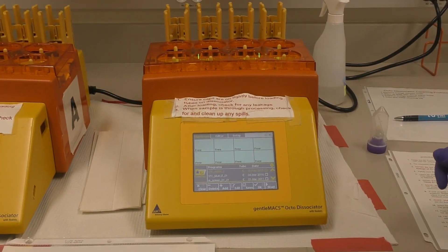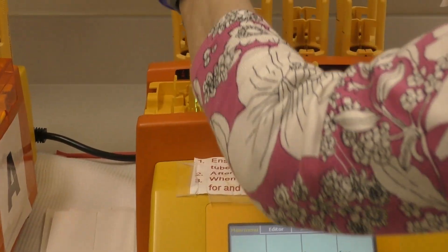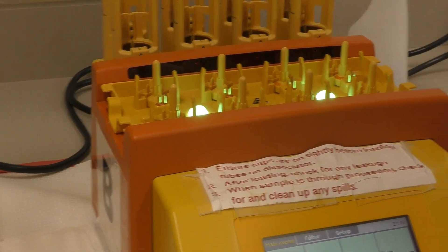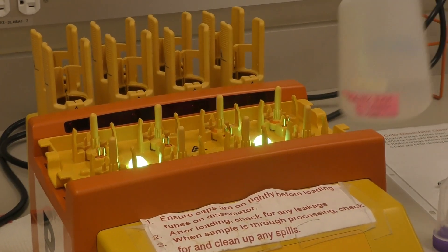Then inspect it for spills. Remove the orange plastic top. Inspect for spills. If there have been any spills, clean with paper towel and ethanol.